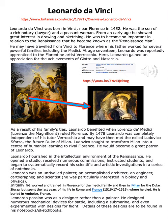Leonardo was an unrivalled painter, an accomplished architect, an engineer, a cartographer — somebody who makes maps — and a scientist. He was particularly interested in biology and physics. Initially, he worked and trained in Florence for the Medici family, and then moved to Milan to the Duke of Sforza. He spent the last years of his life in Rome and then his final years in a place called Amboise in France, where he was a good friend of the King of France. He died and is buried in Amboise.